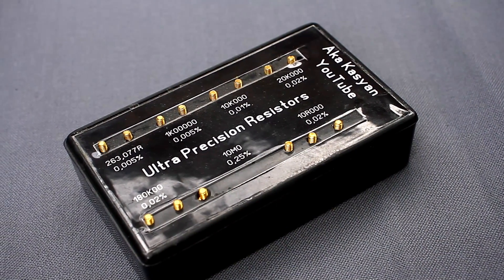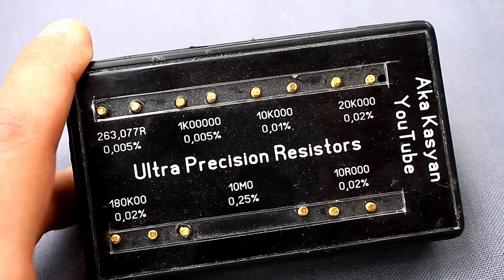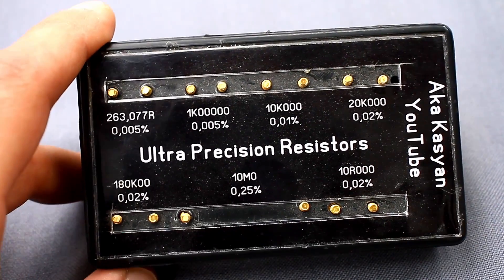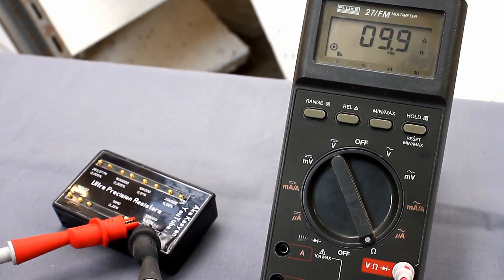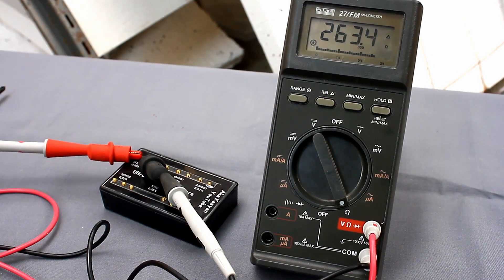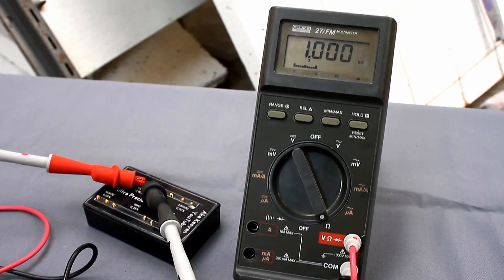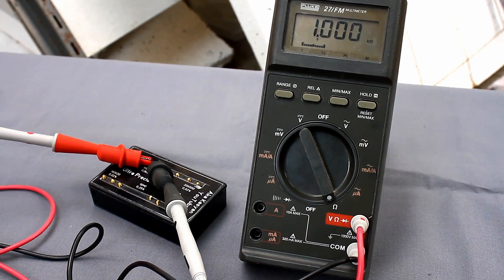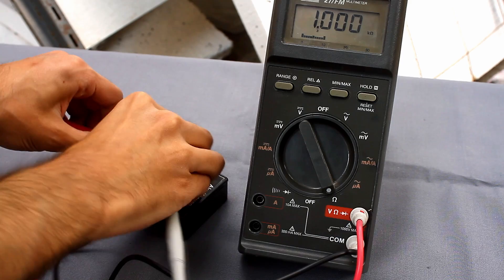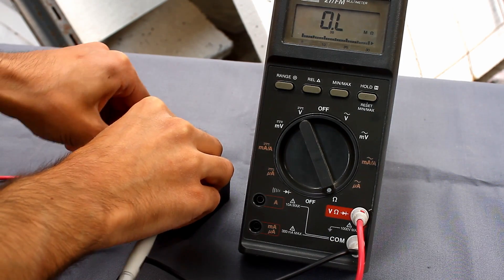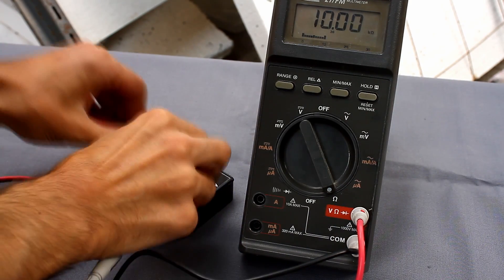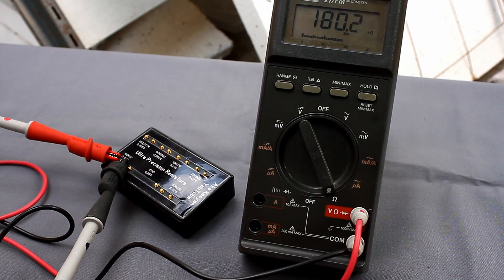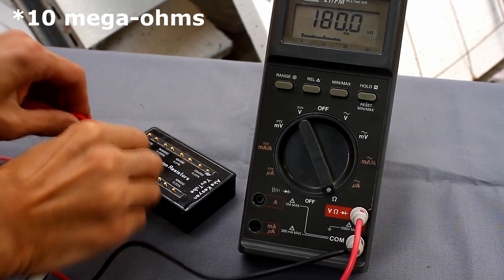To measure resistance I will use ultra high precision and ultra stable resistors. 10 ohm, 263.077 ohm, 1 kilo ohm, 10 kilo ohm, 180 kilo ohm, 10 kilo ohm.